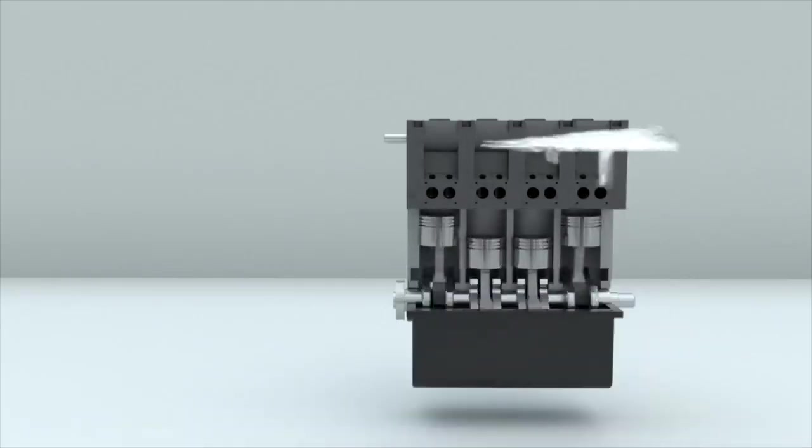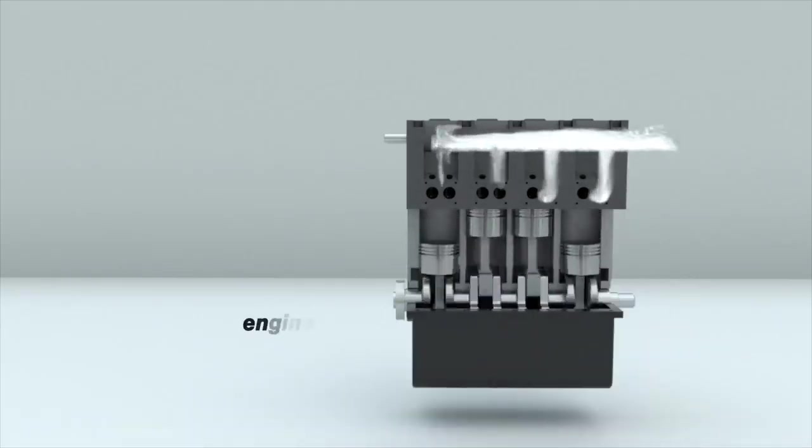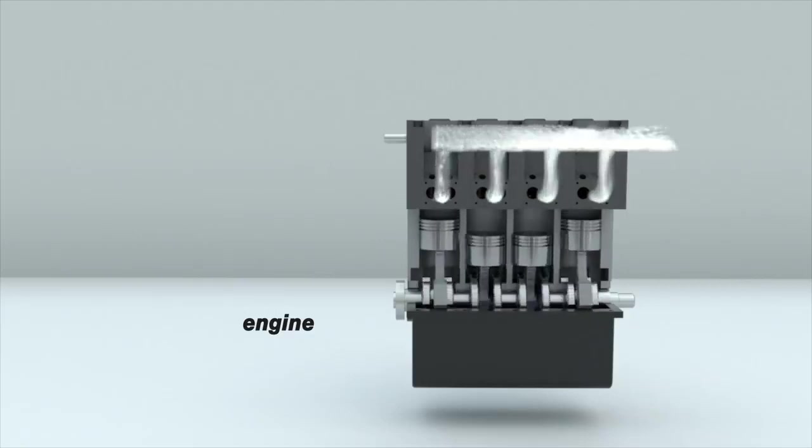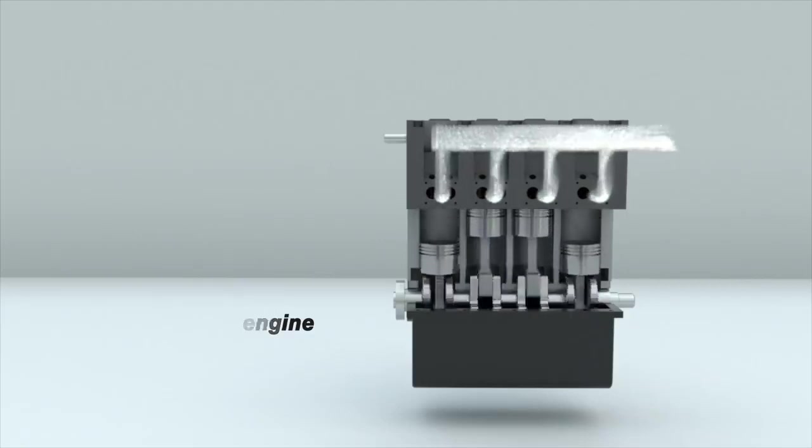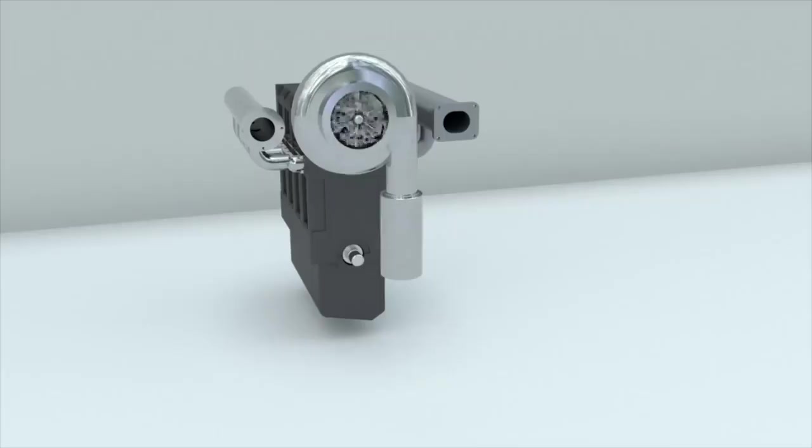How does a turbocharged car engine work? Air can either enter the engine under the influence of atmospheric pressure at the moment when the piston moves and increases the volume of the chamber, or be supplied with the help of a special compressor.